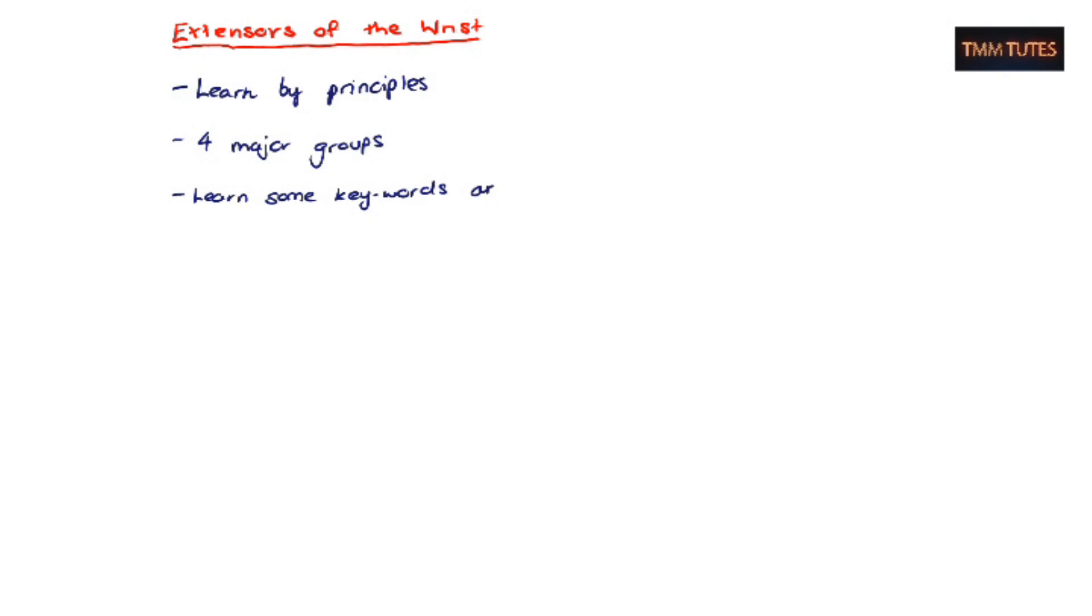So first we'll learn some keywords and these will take you through both the extensors, flexors, and all parts of anatomy. It's easier to learn these keywords rather than learning the individual muscles themselves. So brevis just means short like brief and longus means long as the name suggests and they nearly always occur together or there's at least a matching muscle, not necessarily in the same group.